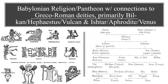This diagram on the right-hand side compares some of the Babylonian deities to the deities of the Greeks and the Romans, suggesting that Babylonian religious beliefs may have spread westward to the civilizations of Greece and eventually to Rome.